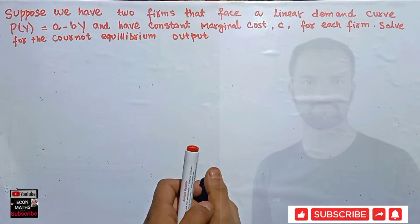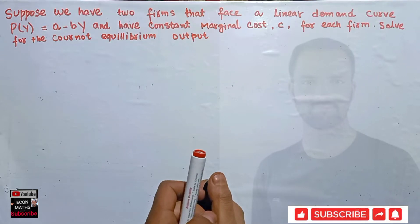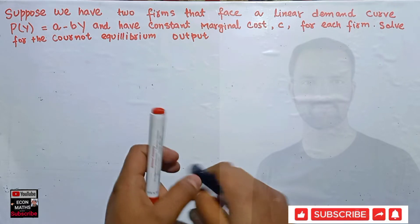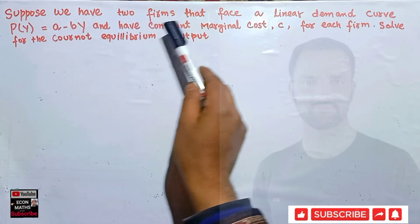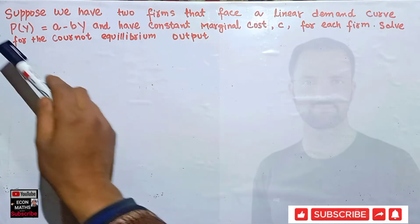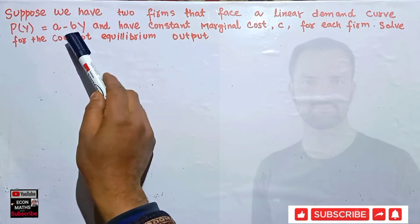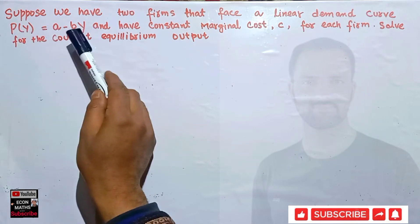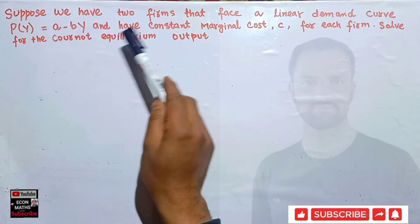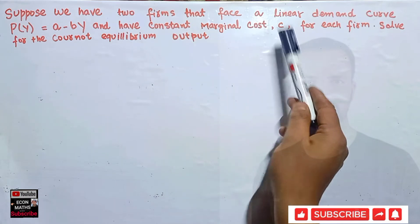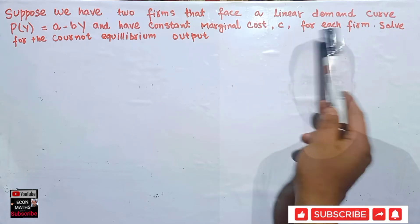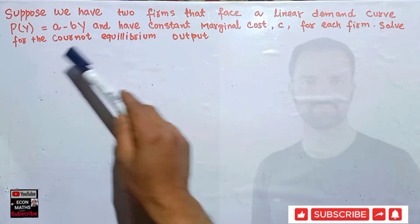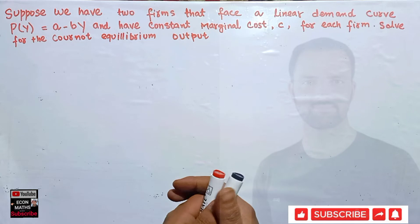Hi, this is Halal. In this video on the mathematical economics series, we will try to solve a problem on Cournot equilibrium that was asked by a brother on WhatsApp. The question is: suppose we have two firms that face a linear demand curve given by P = a - bY, where P is the price and Y is the total output, and both firms have the same constant marginal cost c. We have to find the Cournot equilibrium output.